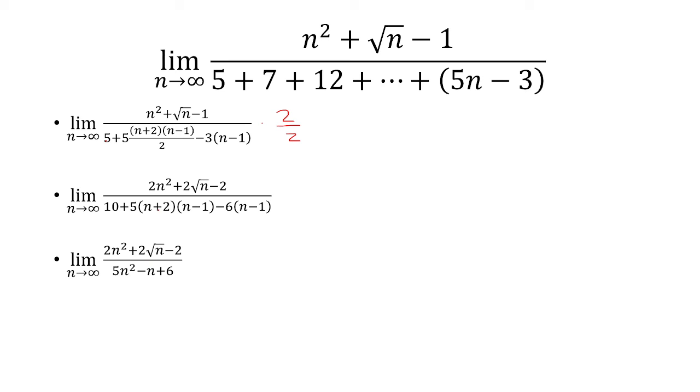I simplified this entire denominator. I foiled it out, distributed the 6, etc. When you do that you get 5n squared minus n plus 6.